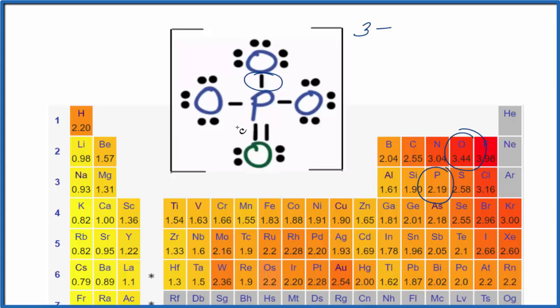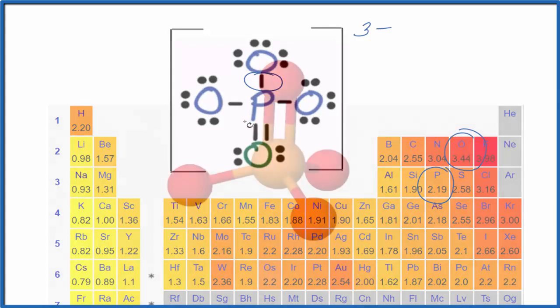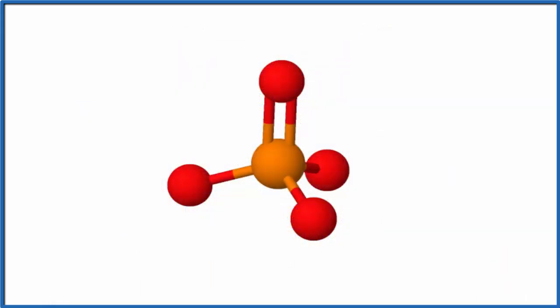Let's look at the molecular geometry for PO4³⁻, so here's our phosphate ion. The center is the phosphorus, the orange, and then we have our oxygens, they're red.